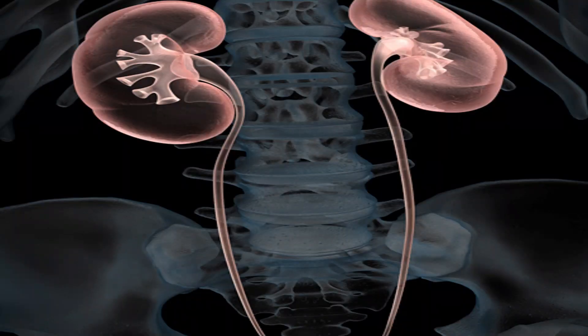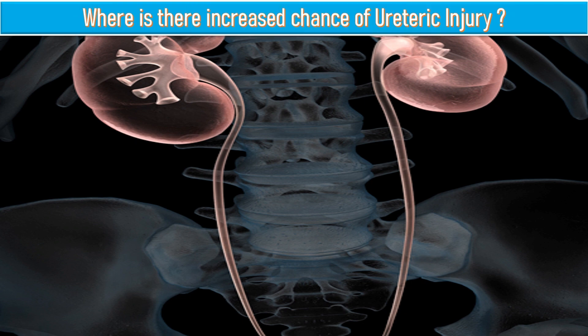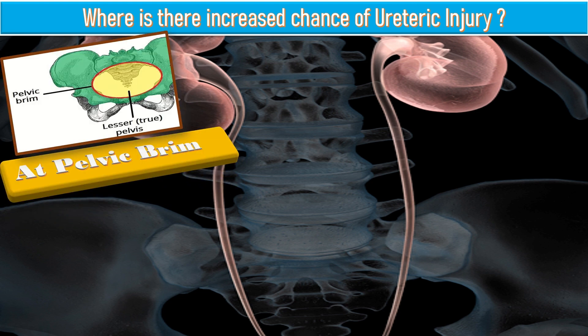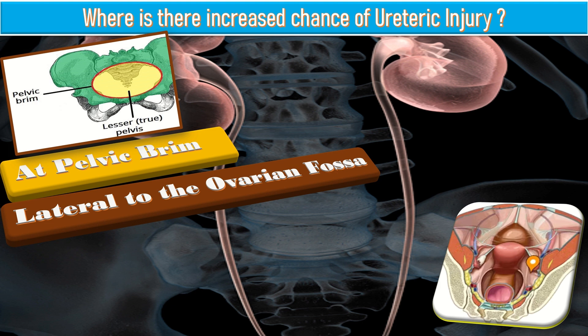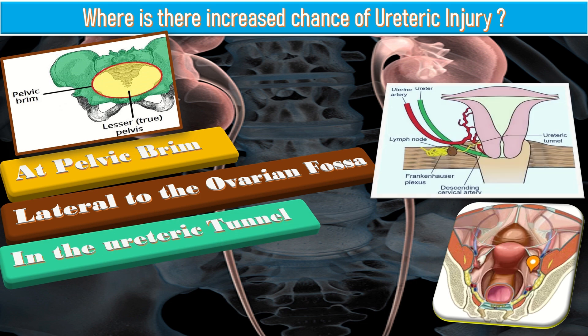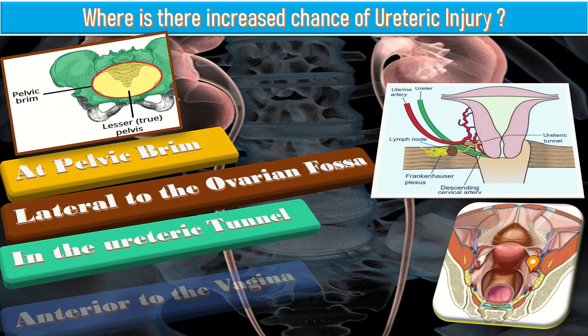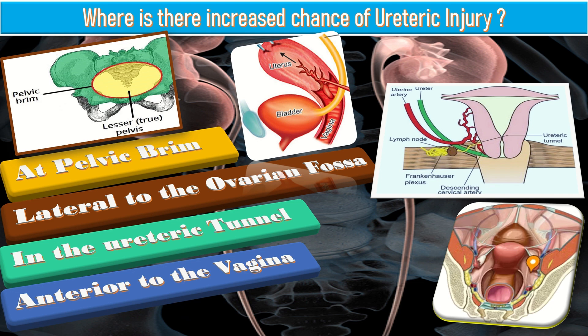Another very important question — which every gynecologist and surgeon should know — is: what are the commonest sites of ureteric injury? First, at the pelvic brim level, where it can be confused with the infundibulopelvic ligament. Second, lateral to the ovarian fossa, where it can be adherent to an ovarian mass during oophorectomy. Third, in the ureteric tunnel beneath the uterine artery while clamping, cutting, and ligating the Mackenrodt ligament. Fourth, anterior to the vagina where it runs into the bladder, two to three centimeters below the anterior vaginal fornix.